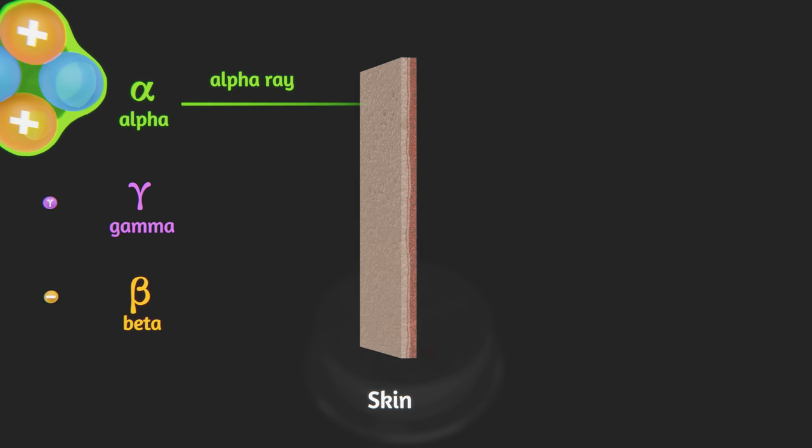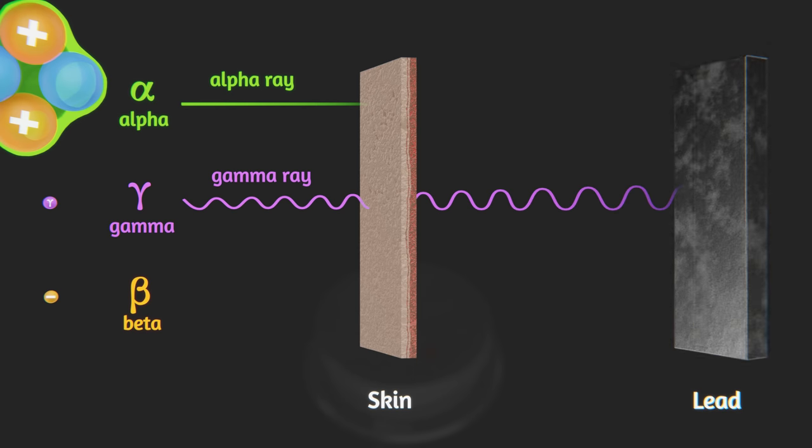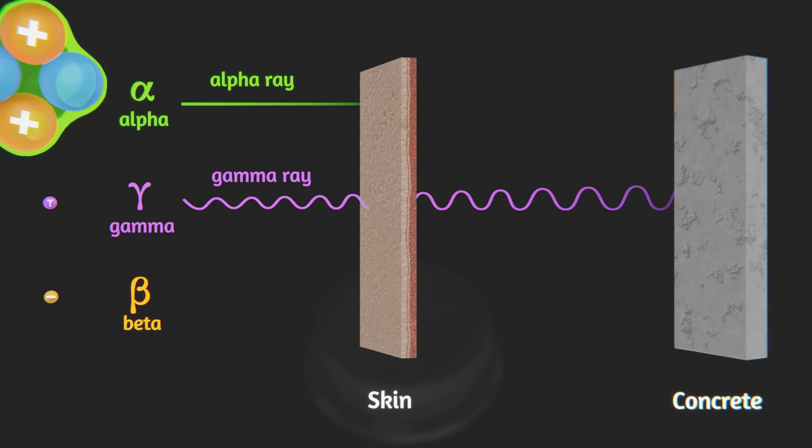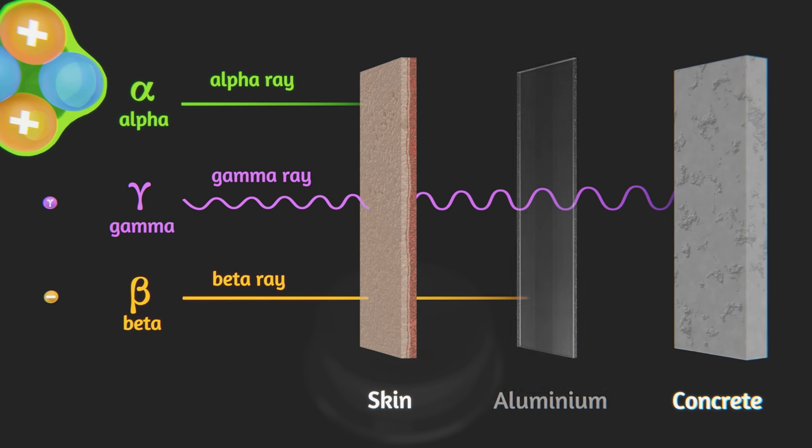However, gamma particles or photons are more dangerous because they're able to travel much further and through much thicker objects, and only dense metals like lead or layers of concrete can stop them. And beta particles can travel through skin, but just a thin sheet of aluminum can stop them.